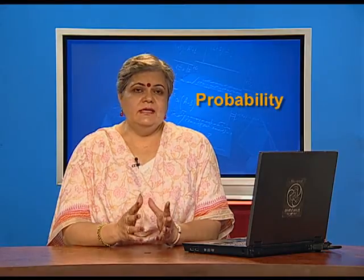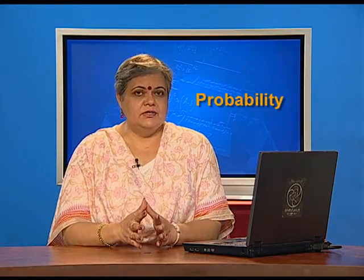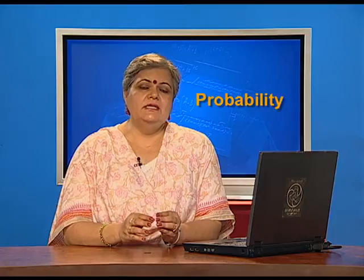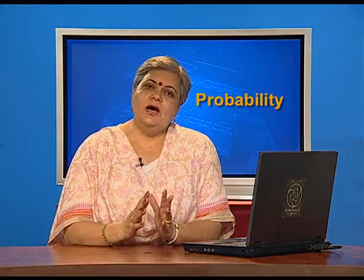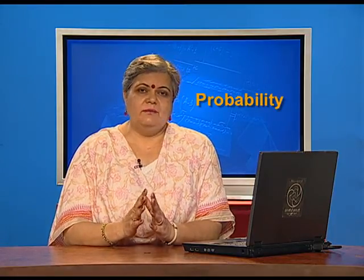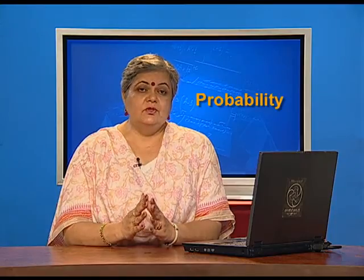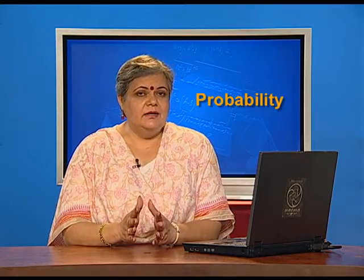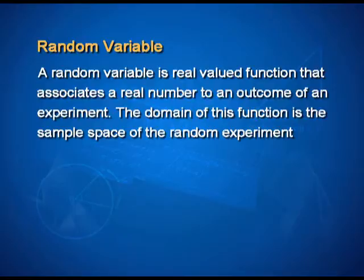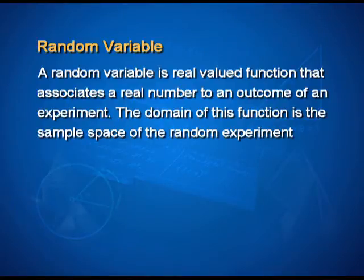Random variable acts as a real valued function which associates a real number to an outcome of the sample space. So, the formal definition of random variable is: a random variable is a real valued function that associates a real number to an outcome of an experiment. And therefore, the domain of this function is the sample space of the random experiment.